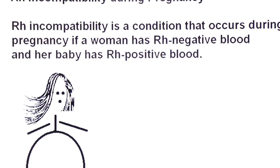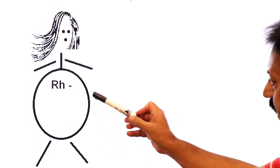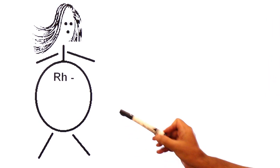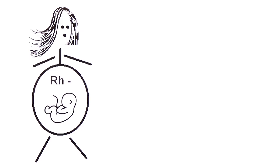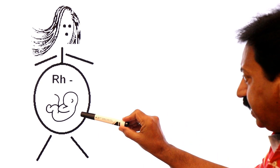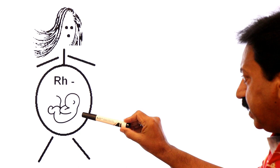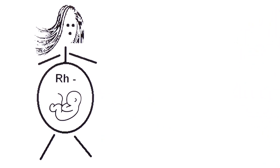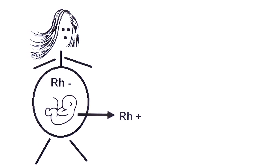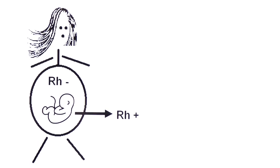Look at the diagram. This lady is pregnant — what is her blood type? Her blood type is RH negative. And you can see a fetus developing inside her uterus. The blood type of this developing fetus is RH positive.